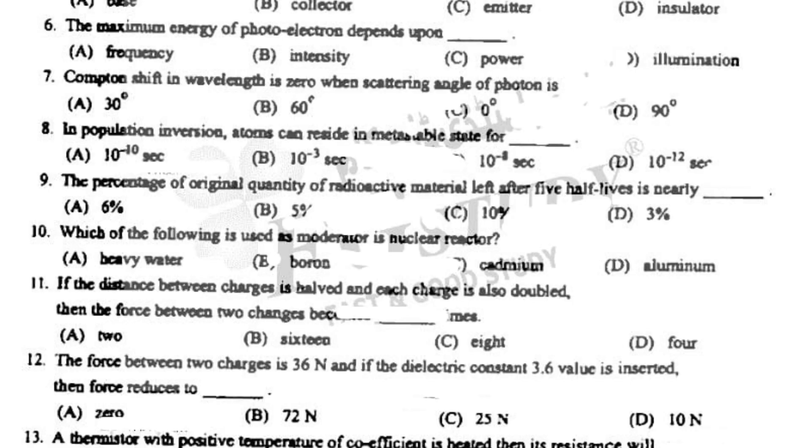The maximum energy of photoelectron depends upon frequency. Compton shift in wavelength is 0 when scattering angle of photon is 0 degrees.